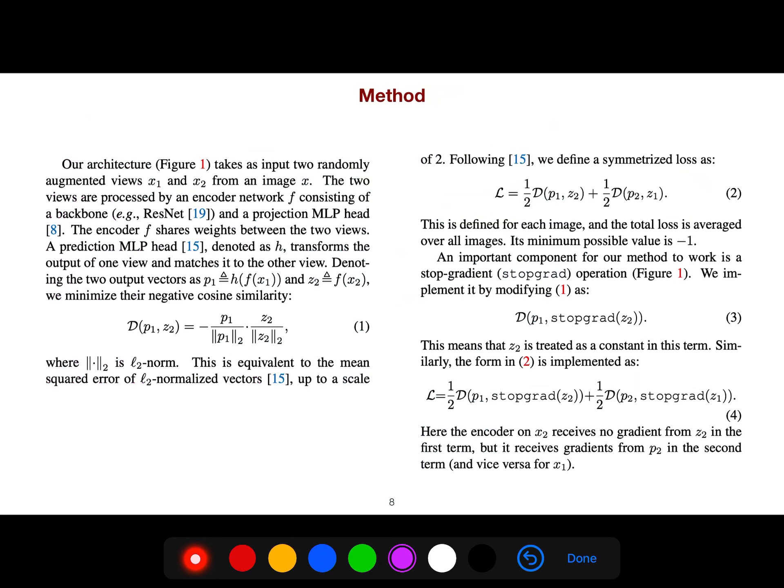The architecture takes as input two randomly augmented views, X1 and X2, from image X. The two views are processed by the encoder network F, consisting of a ResNet and a projection multilayer perceptron head. The encoder shares weights between the two views. A prediction multilayer perceptron, denoted as h, transforms the output of one view and matches it to the other view, denoting the two input vectors as P1 and Z2. We minimize the negative cosine similarity.